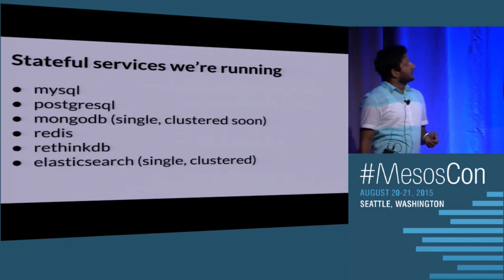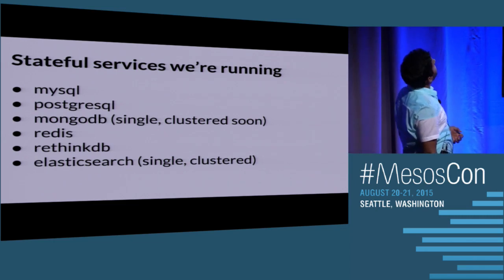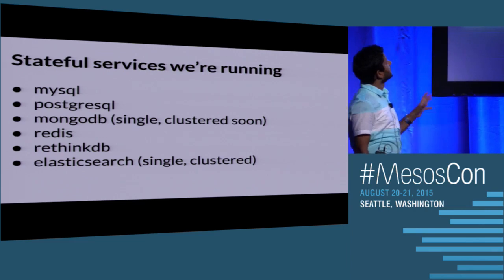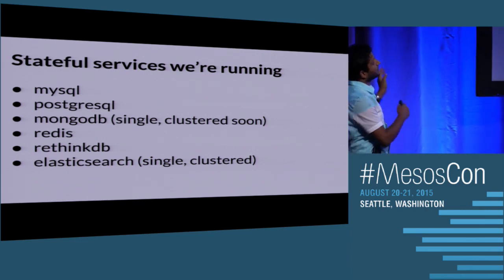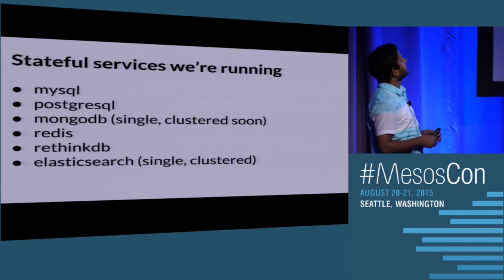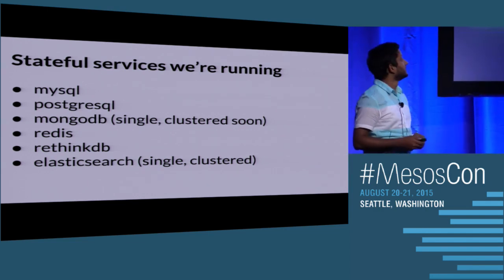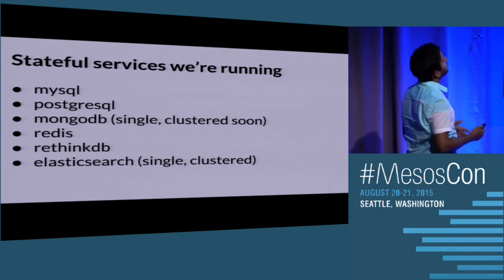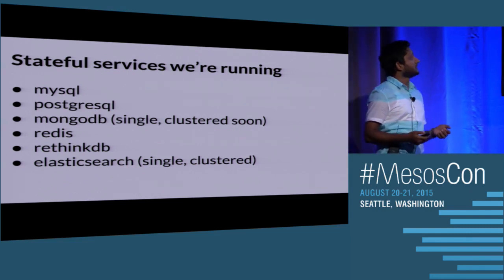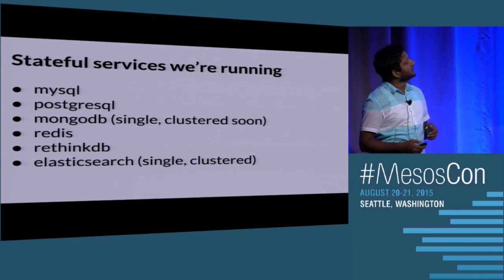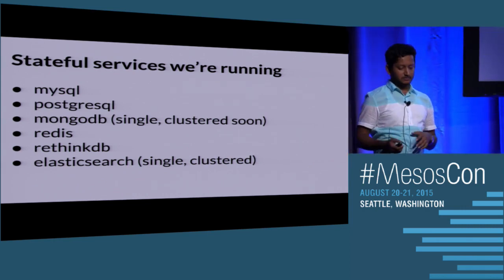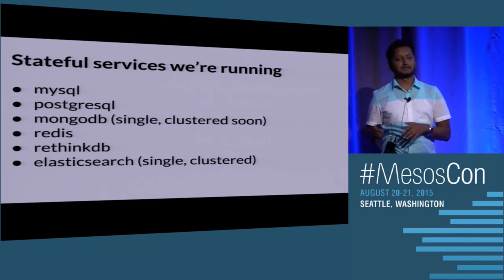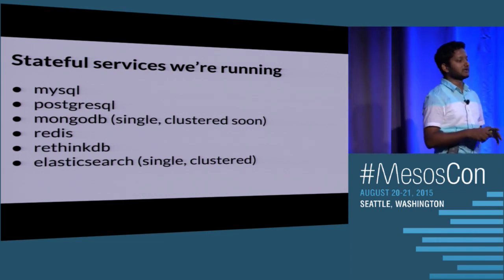Here's a list of stateful services we have run at Moz following these guidelines. We mostly found that the shared file system worked pretty well for us. We've run MySQL, Postgres, MongoDB, Redis, RethinkDB, and Elasticsearch. We did move Elasticsearch later to a different node — not because of Mesos, but because we wanted to use SSDs, and the nodes we were running Mesos on didn't have those.